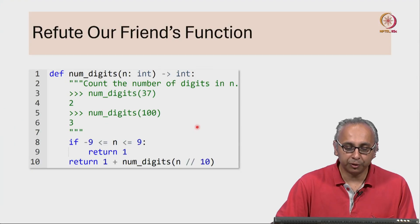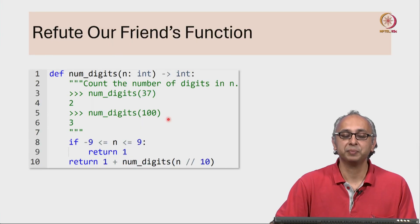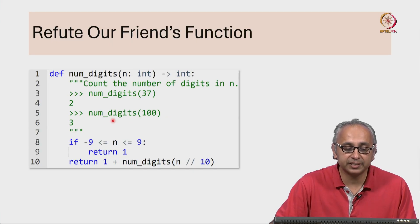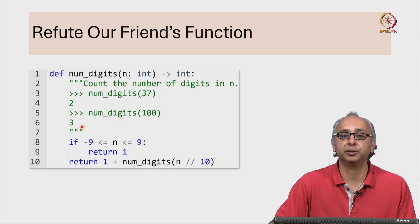So here is our friend's code. Notice our friend has done the same experiment we did, and our friend has clarified that on 100, the answer should be 3.